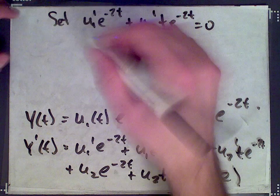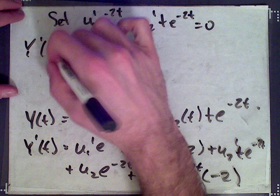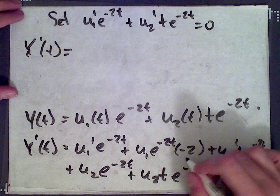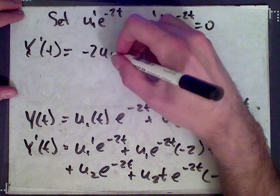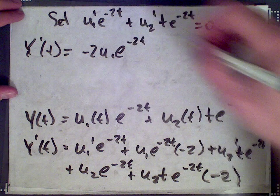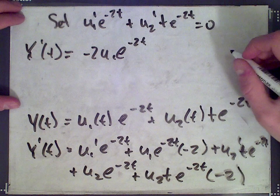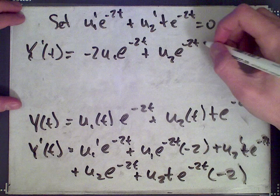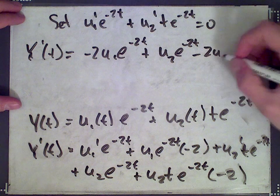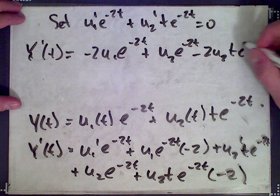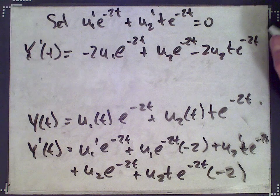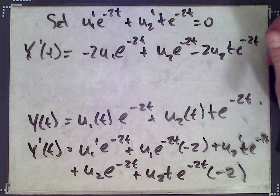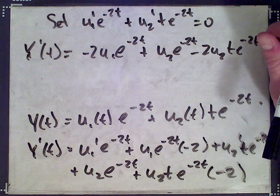With that restriction set to 0, y prime of t simplifies to: -2u1·e^{-2t} + u2·e^{-2t} - 2u2t·e^{-2t}. So we get those three terms.